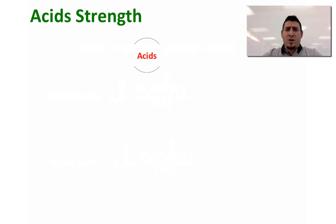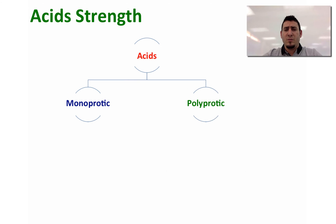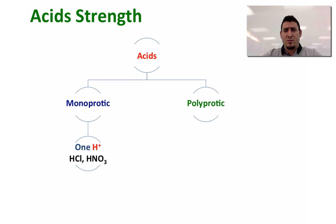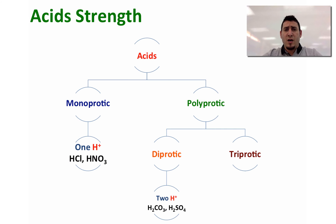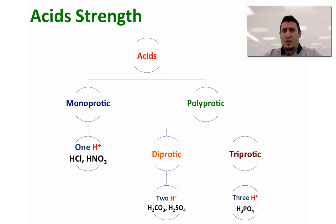We have two main types of acids: monoprotic and polyprotic. Monoprotic acids are molecules or compounds that can give only one hydrogen in solution. For polyprotic acids, we can have diprotic, triprotic, etc. Diprotic compounds can give two hydrogen ions per molecule in solution, and triprotic molecules can give three H⁺ in solution. An example of a diprotic acid is carbonic acid and sulfuric acid. For triprotic, the best example is phosphoric acid.